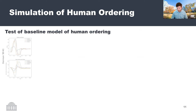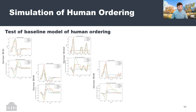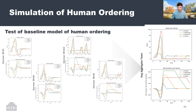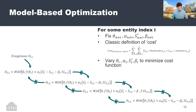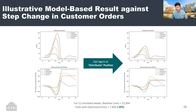This baseline model is able to reproduce bullwhip as seen in classical papers like Sterman's 1989 paper, and also produces an aggregate model of humans making orders within the space. This gives us an opportunity to do an optimization — specifically fixing one entity in the team, allowing the other three to continue to act based on existing models of how real people made orders, but then varying four parameters — theta, alpha, s-prime, and beta — to minimize the overarching team cost. As one example, an optimization performed at the distributor position showed about a 48% reduction in costs.